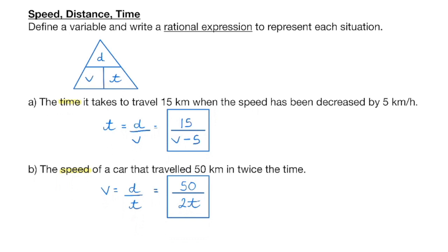Our distance is 15 kilometers and our speed is decreased by five kilometers per hour. We don't know what the speed is, so that's what we're going to represent with a variable. Whatever speed we were originally traveling at, we're now going five kilometers per hour slower. If we are trying to find the speed of a car that traveled 50 kilometers in twice the time, we know that speed is distance divided by time, and it's now taking us twice as long to travel.